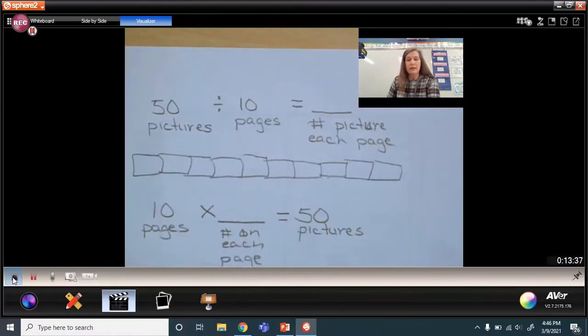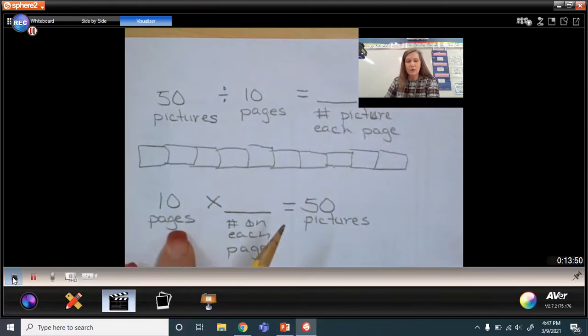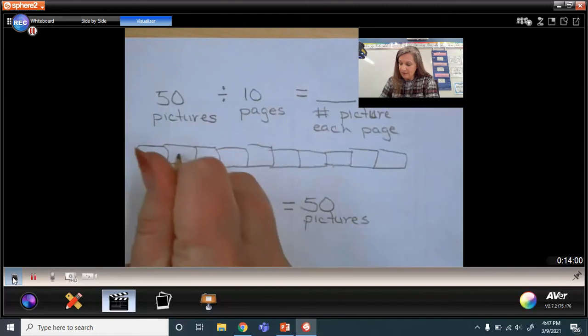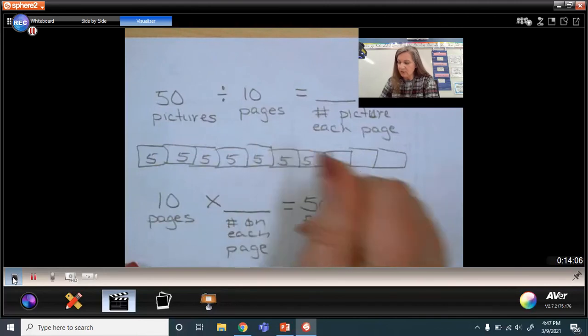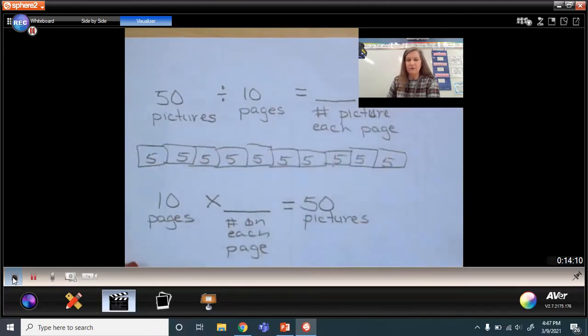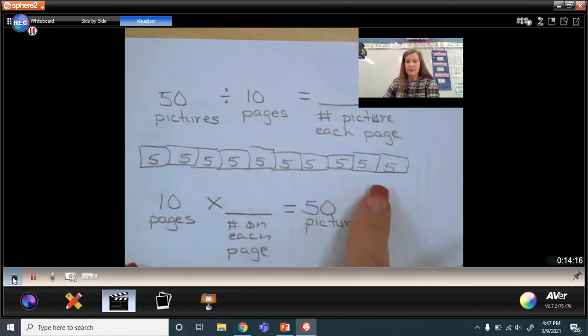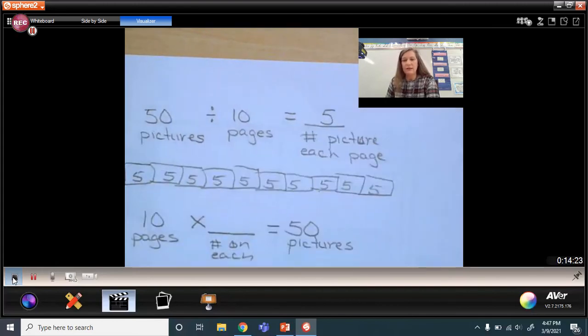So number on each page. So how many would be on each page? Well, if I count by 2s: 2, 4, 6, 8, 10, 12, 14, 16, 18, 20. Well, it can't be 2. So what can I multiply times 10 to give me 50? 5, right? So 5, 10, 15, 20, 25, 30, 35, 40, 45, and 50. There's the 50 pictures. I put them all onto 10 pages. So I know that if I take 50 and divide it by 10, I get 5 on each page.